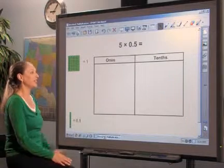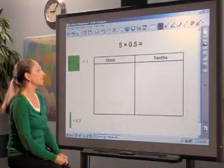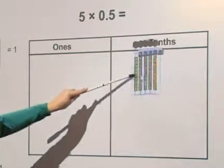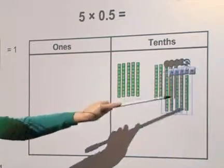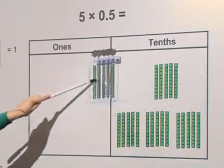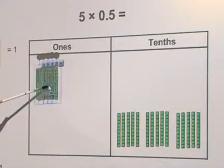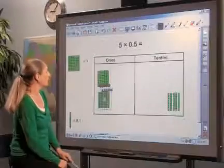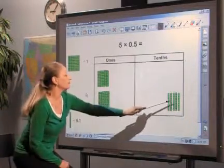For example, you can use base 10 blocks and place value charts to model and solve a problem, such as 5 times 5 tenths. Review the meaning of the problem with students. In other words, 5 times 5 tenths means 5 groups of 5 tenths. Students can then regroup and count the blocks to determine the total or product. 5 times 5 tenths is 2 and 5 tenths.